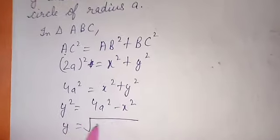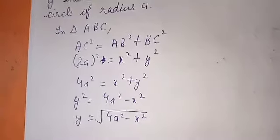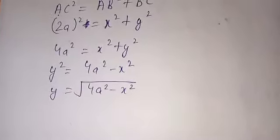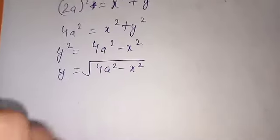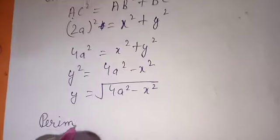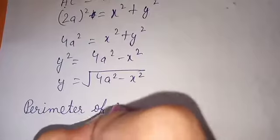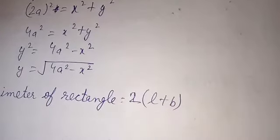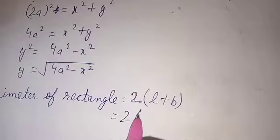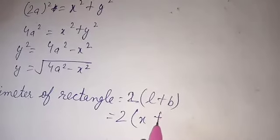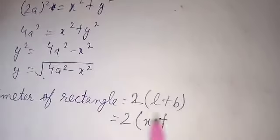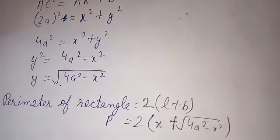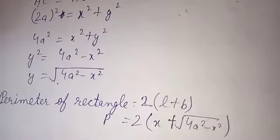Now we have to find the perimeter of the rectangle. Perimeter = 2(length + breadth) = 2(X + Y). Substituting Y = √(4A² − X²), the perimeter P = 2(X + √(4A² − X²)). Our perimeter is now in one variable, so we can differentiate it.